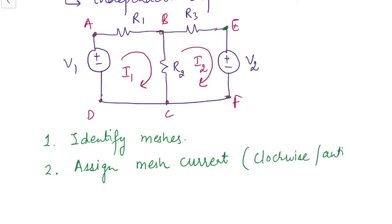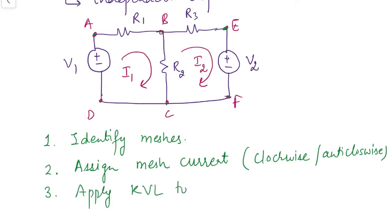The direction chosen doesn't matter because if our assumption is wrong, we will get a negative value for the answer. The next step is to apply KVL to each mesh — we apply KVL to the meshes only, not to all loops.